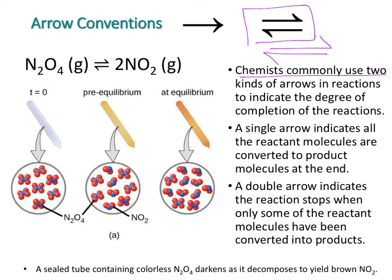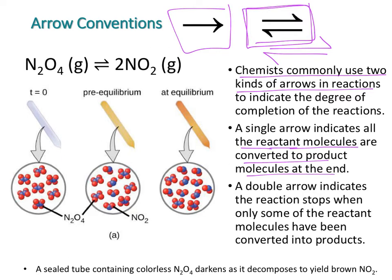Chemists commonly use two types of arrows. You've probably only seen the single arrow in Chem 1 and earlier in this semester, but you will see the double arrow in this chapter and future chapters. A single arrow indicates that all reactant molecules have been converted to products, while the double arrow shows that both reactants and products are present, since the reaction can go in either direction.